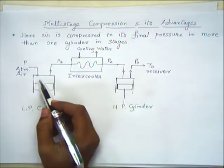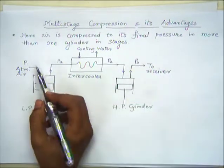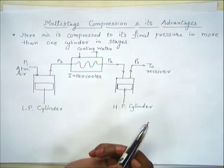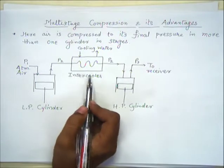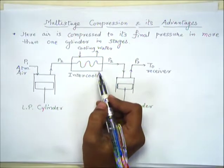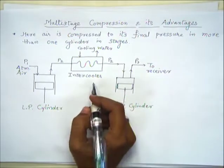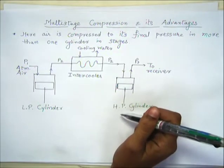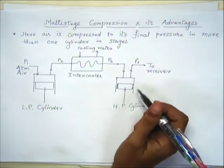For example, if the final required pressure is 5 bar, we compress from 1 bar to 2 bar in the low pressure cylinder. P2 is 2 bar; the air then passes through the intercooler where we approach isothermal compression by reducing the temperature. Then in the high pressure cylinder, pressure is increased from 2 bar to 5 bar.